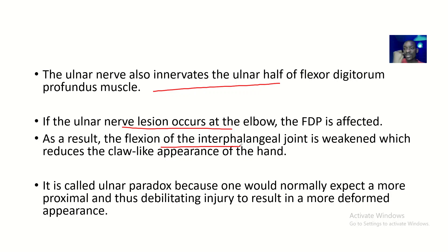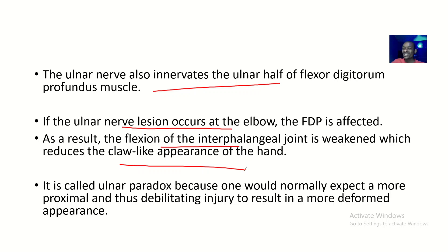The flexor digitorum profundus is the chief flexor of the hands. So if it is affected, the flexion will be weakened. As a result, the flexion of the interphalangeal joint is weakened, which reduces the claw-like appearance of the hand. There will still be claw-like appearance, but it will be reduced because the muscle that would have made the clawing worse is affected. It is called the ulnar nerve paradox because one would normally expect a more proximal damage to the ulnar nerve to cause more damage, but it's actually the other way around — there's reduced damage.